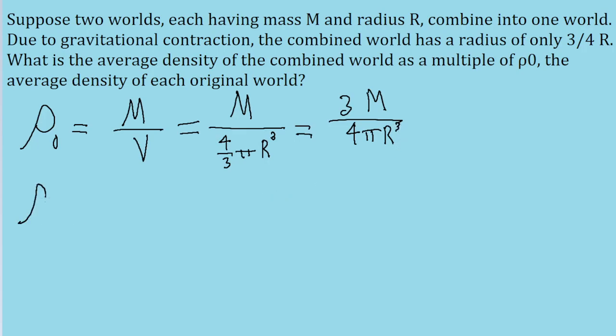Now let's also establish a regular ρ to represent the average density of the combined world. So instead of writing just M, I'm going to write 2M because they've been put together. And then the volume of the combined world...